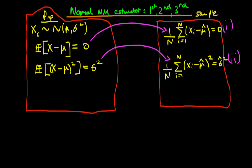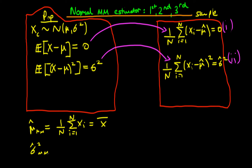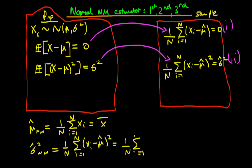We can see quickly that if we expand the first equation and sum over mu hat, we get that mu hat method of moments is just equal to one over n times the sum from i equals one to n of x_i — in other words, mu hat is just the sample mean. That means sigma hat squared method of moments, substituting this expression for mu hat, is just one over n times the sum from i equals one to n of x_i minus x-bar, all squared.